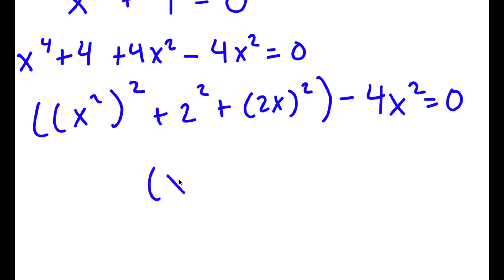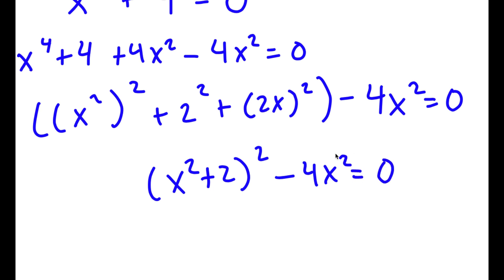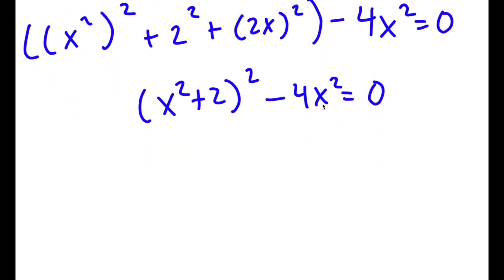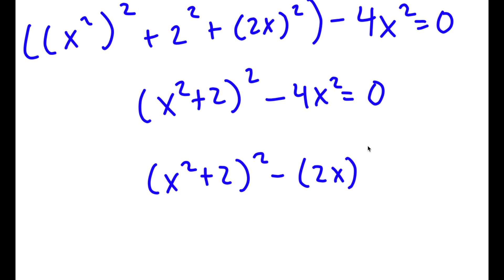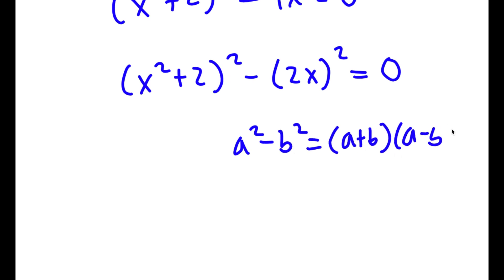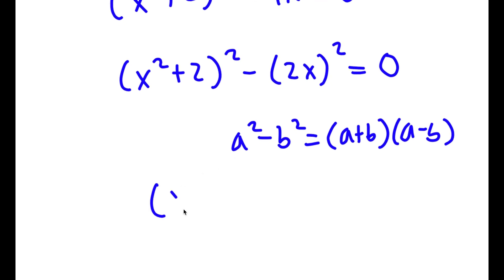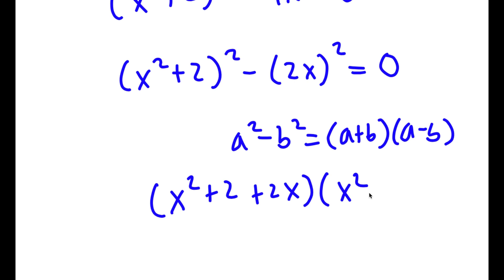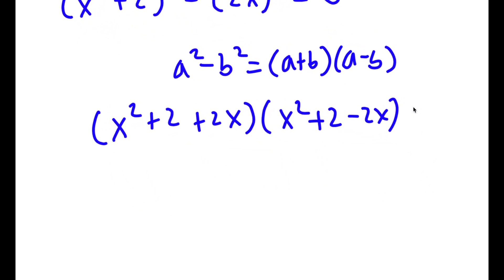Now if I factor the perfect square trinomial, I get x squared plus 2, the whole thing squared, minus 4x squared equals 0. And 4x squared is the same as 2x squared. Using the difference of squares identity — a squared minus b squared equals a plus b times a minus b — this becomes x squared plus 2 plus 2x times x squared plus 2 minus 2x equals 0.